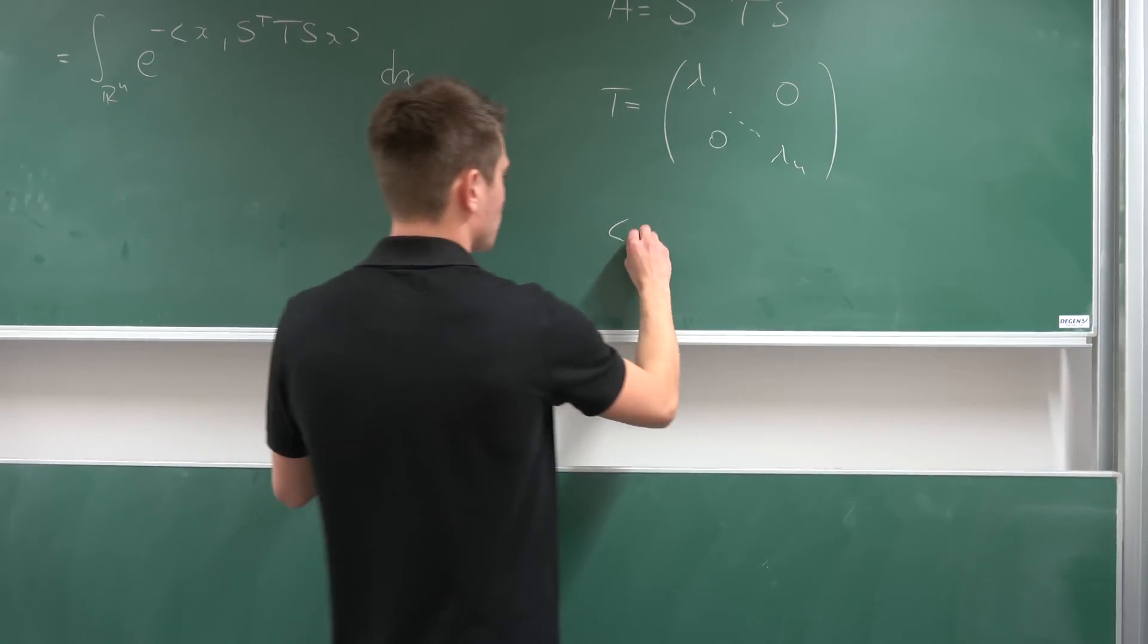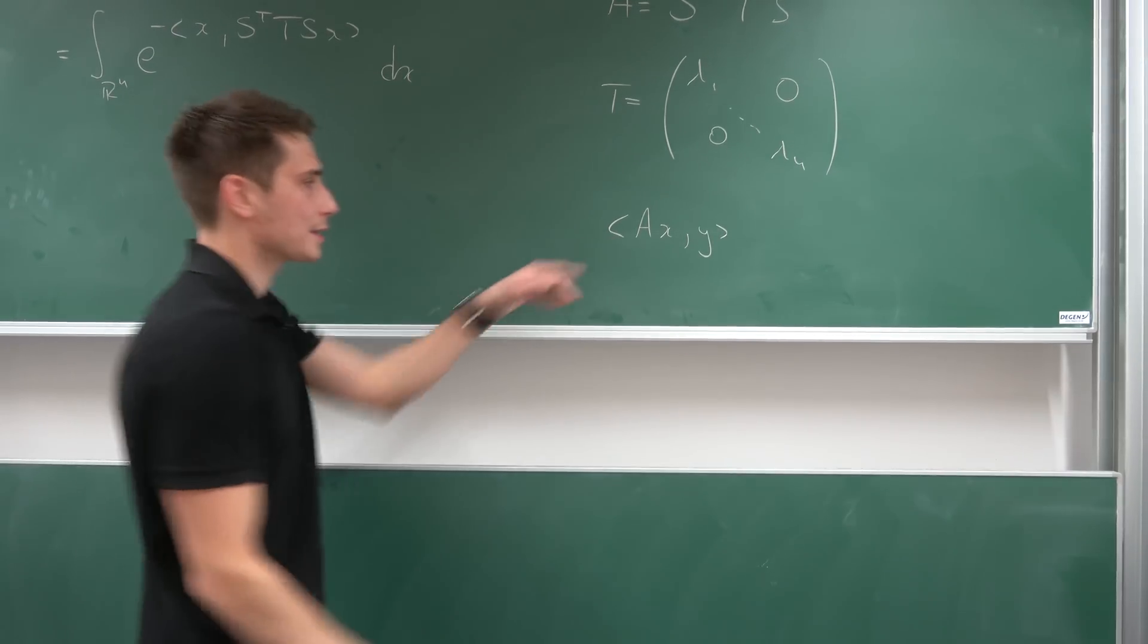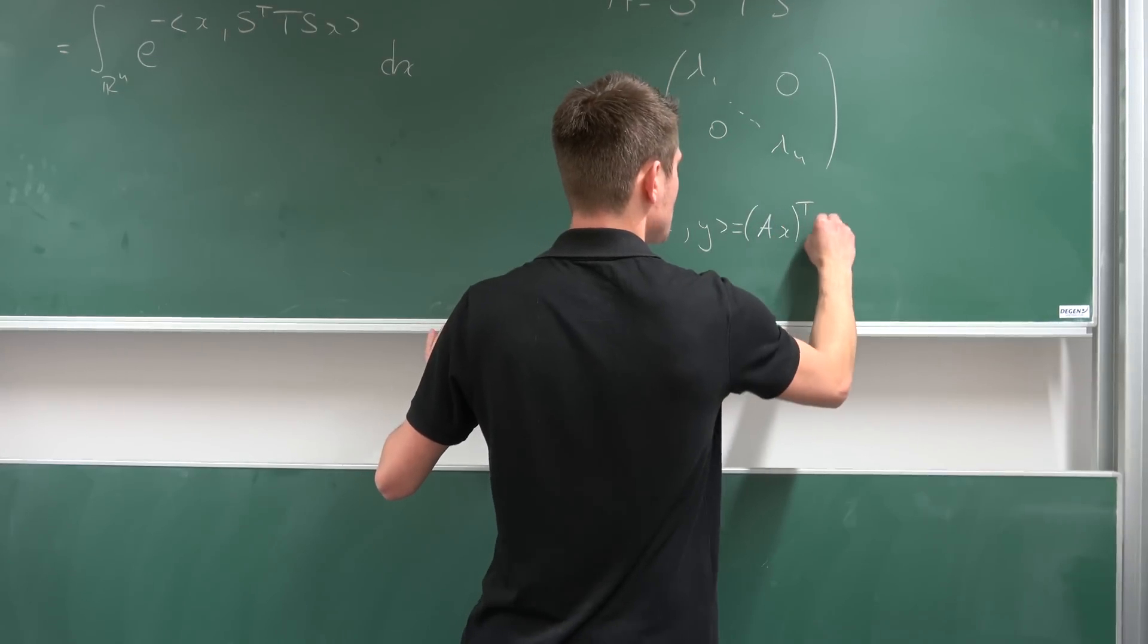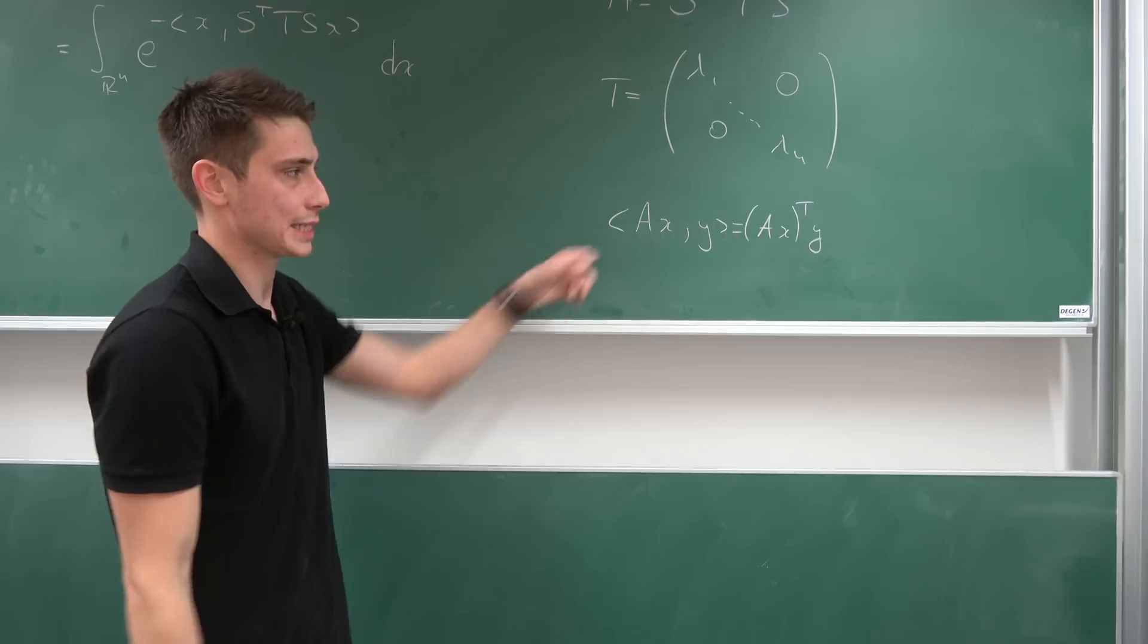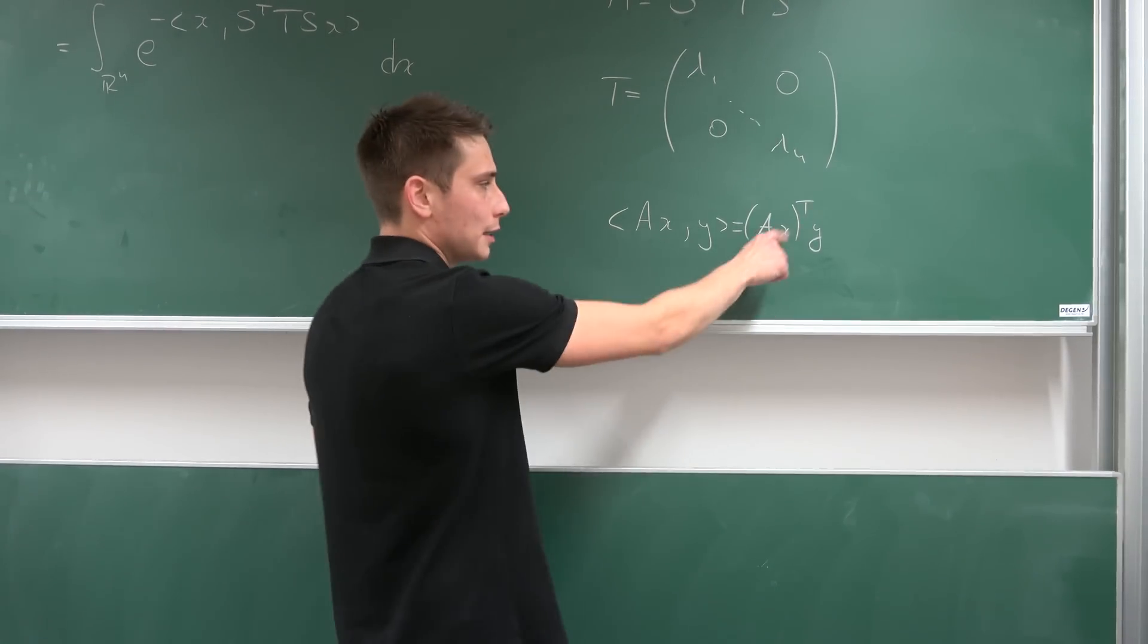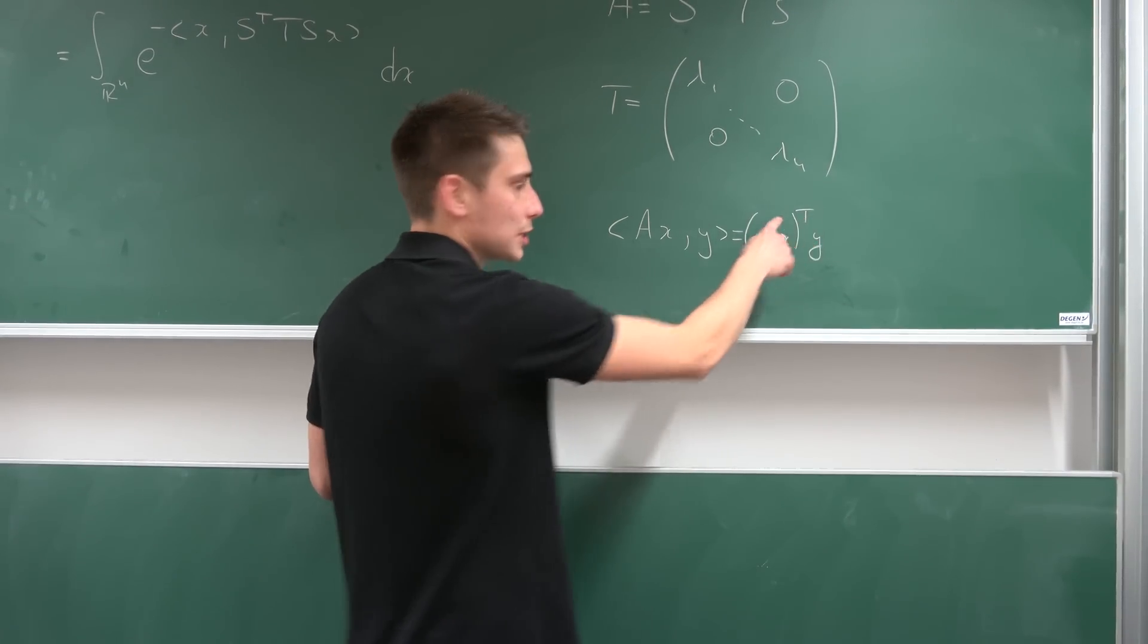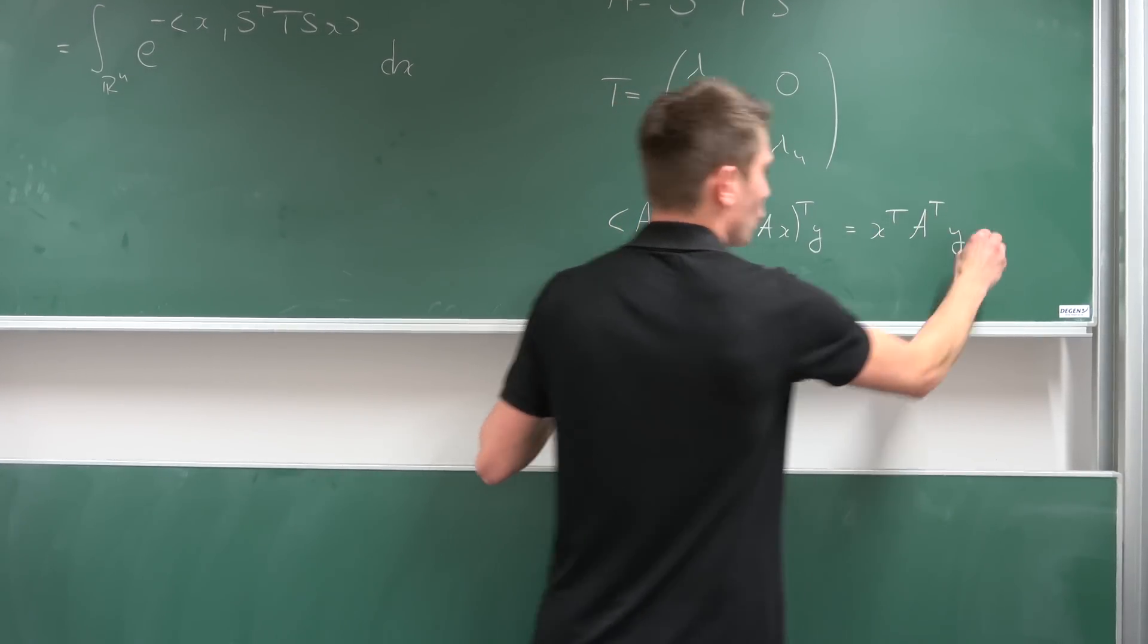First, if we take the inner product of, let's say, a times x comma y, we can actually rewrite this as just a times x transposed times y. This is just how the inner product works, even with matrices in here. But we can actually change the order of x and a if we just distribute this transposed into everything. So we have x transposed times a transposed y.